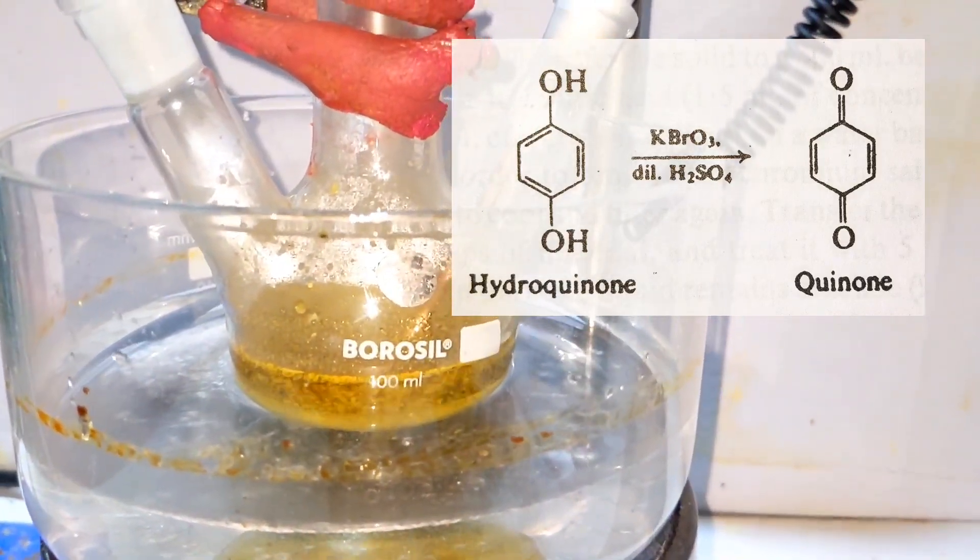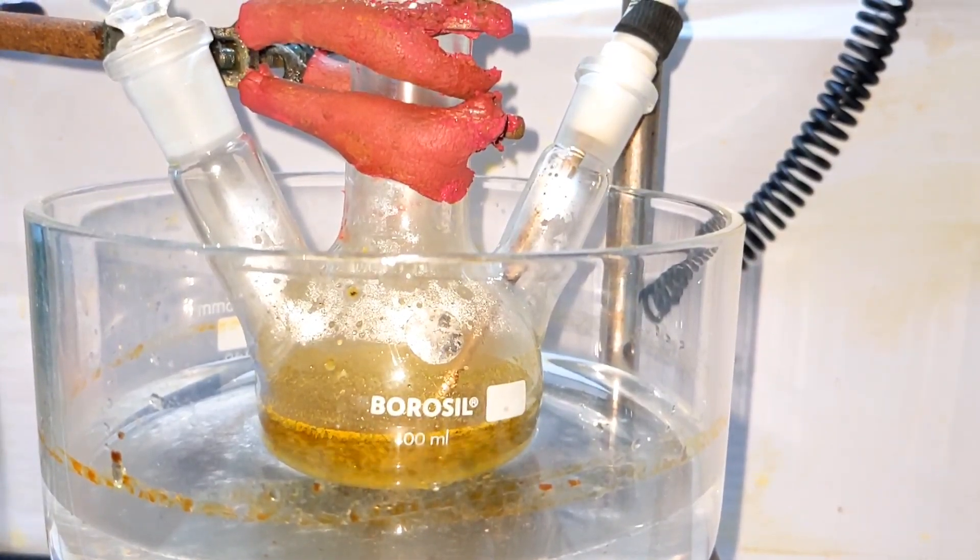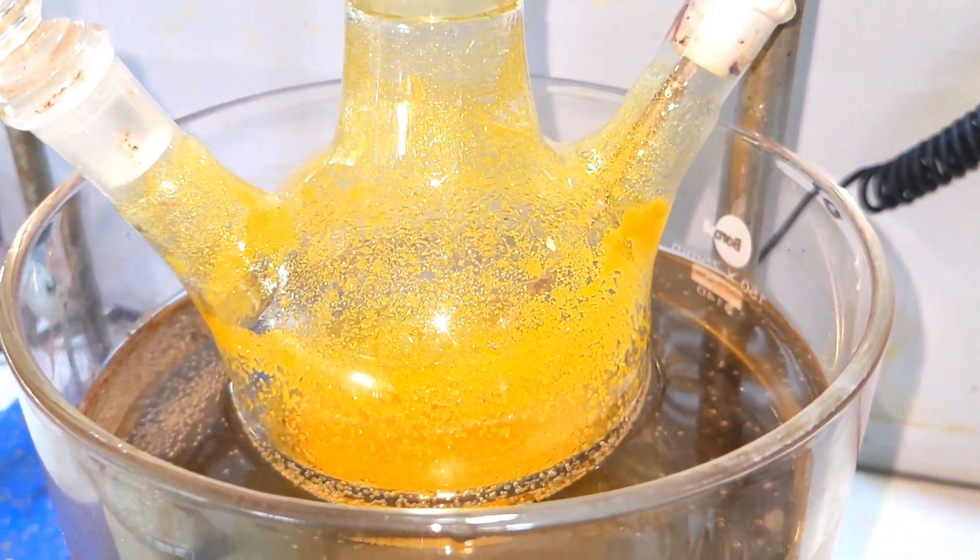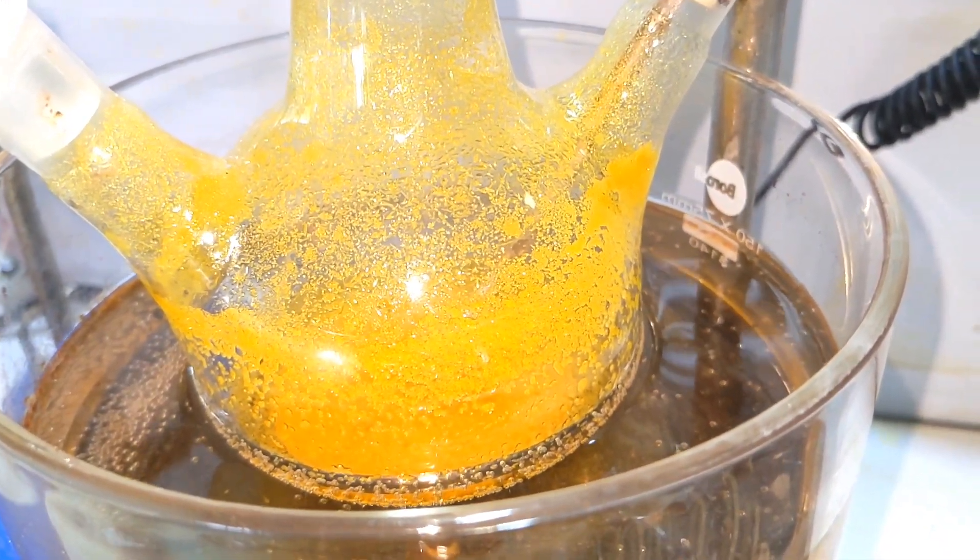Now heat the reaction mixture at 80 degrees Celsius for 10 minutes under reflux to ensure complete reaction. By this time the contents of the flask will have a beautiful yellow color to it.